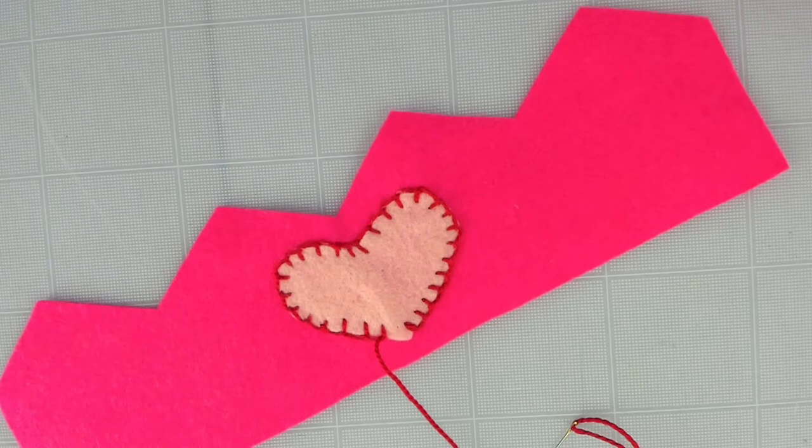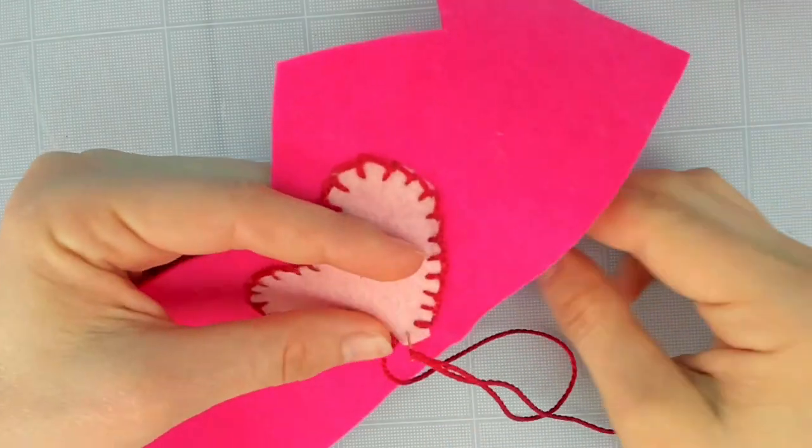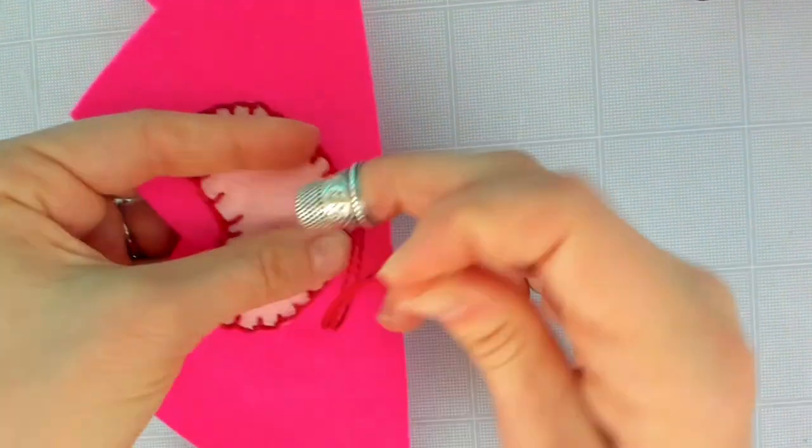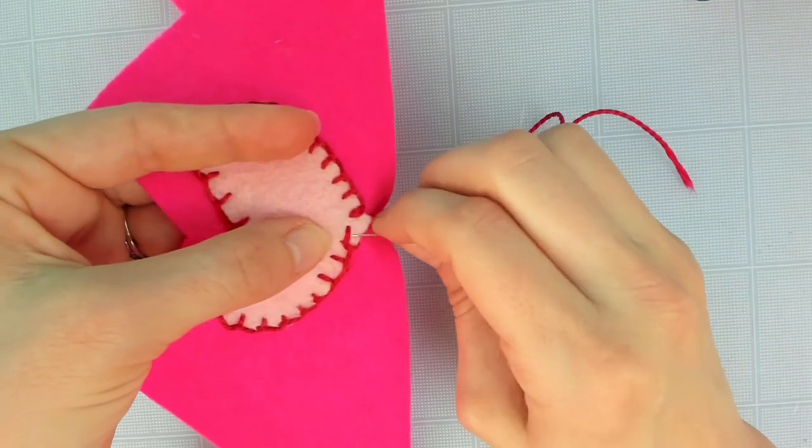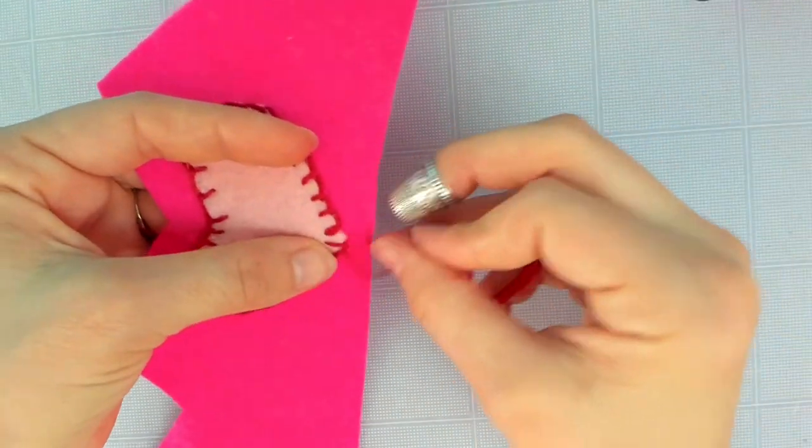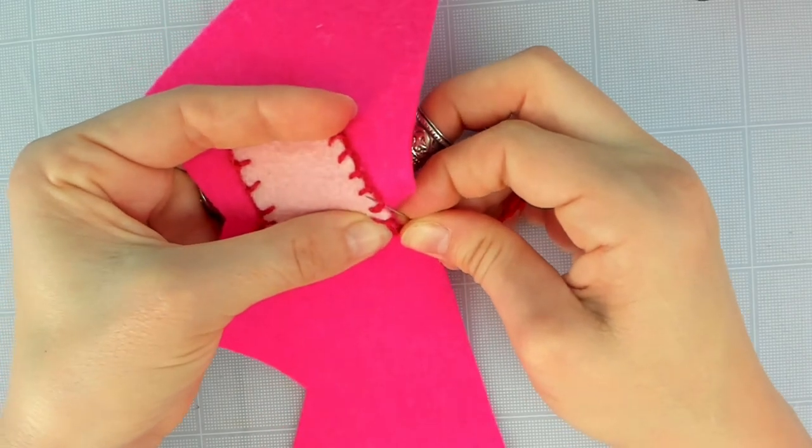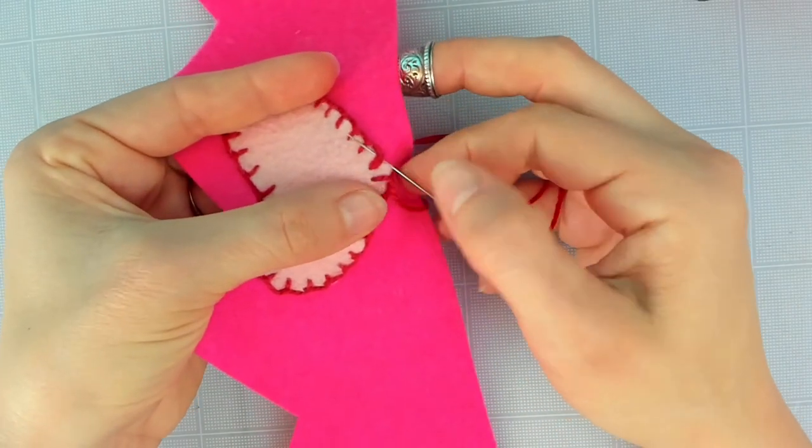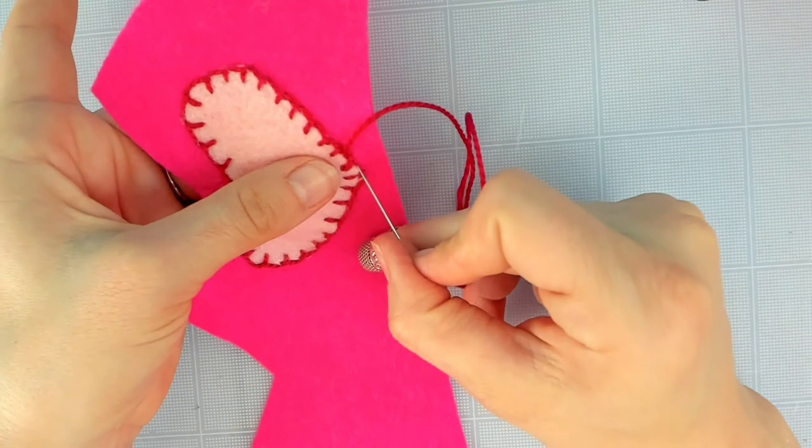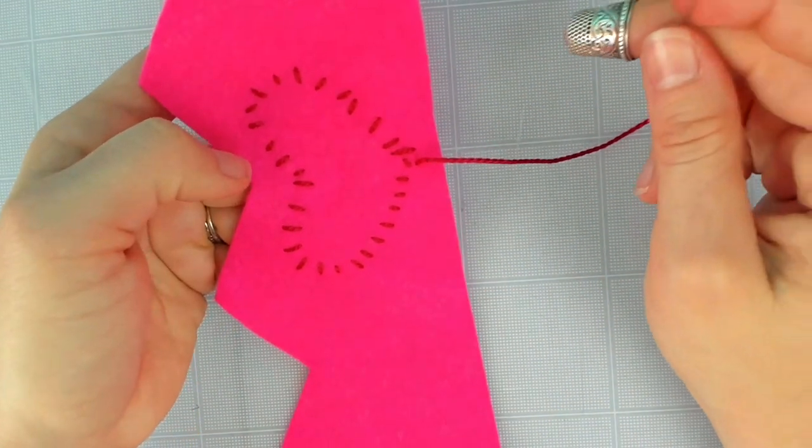So once you have gone all the way around your shape, you do a little trick with your last stitch. I'm going to start it just like normal. Come through here and grab my loop. And then I want to come over to that first stitch I made and reach under it just like I did to start. Go under it and then I'll take a little tiny stitch and bring my needle to the back.